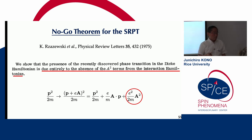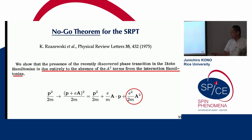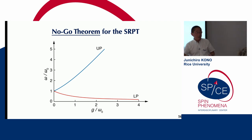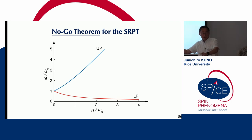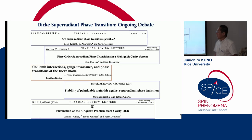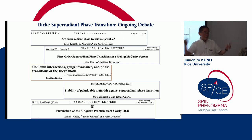However, it was immediately pointed out that this phase transition should not occur because Hepp and Lieb did not include the A-squared term in the light-matter Hamiltonian. If you include the A-squared term, the energy of the lower polariton never becomes negative — it asymptotically approaches zero as the coupling constant goes to infinity. So there's no phase transition: the no-go theorem. But this was just the beginning of many years of theoretical debates among theorists since the 1970s.